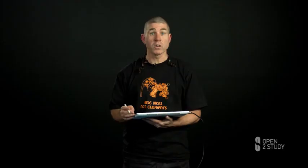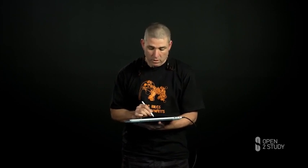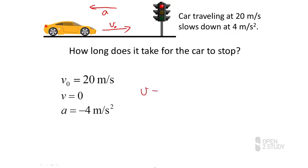We don't know what the time is. But we can use our equation of motion to say that our velocity will be our initial velocity plus acceleration multiplied by time, and we can rearrange that algebraically.